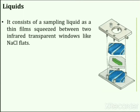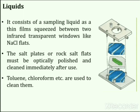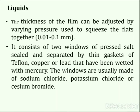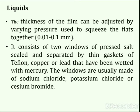Liquid samples are analyzed by making a thin film squeezed between two infrared-transparent windows like NaCl flats, also called salt plates or rock salts. The flats must be optically polished and cleaned using toluene, chloroform, etc., and should be dry, handled only by their edges. Thickness of the film can be adjusted by varying the pressure used to squeeze the flats together, and thickness can vary between 0.01 to 0.1 mm. The cell consists of two windows of pressed salt sealed and separated by thin gaskets of teflon, copper, or lead wetted with mercury. Windows are usually made of sodium chloride, potassium chloride, or cesium bromide. One cell contains the sample and a second contains the pure solvent placed in the reference beam, so that solvent absorptions are cancelled out and the spectrum recorded is that of the solute alone.